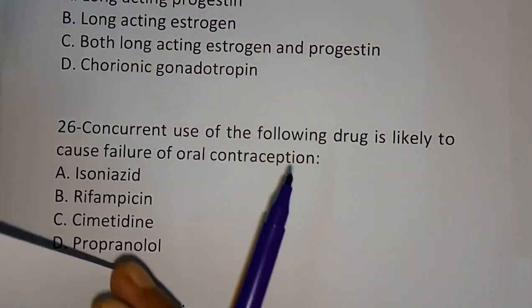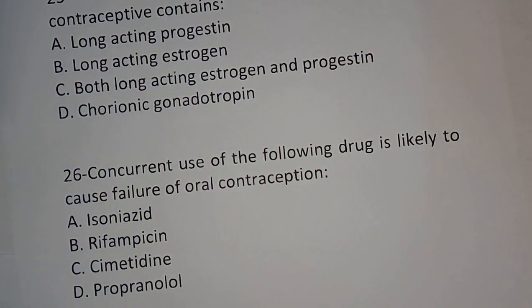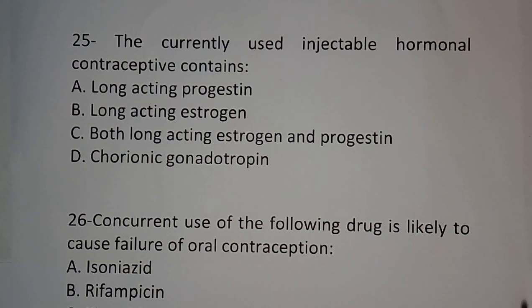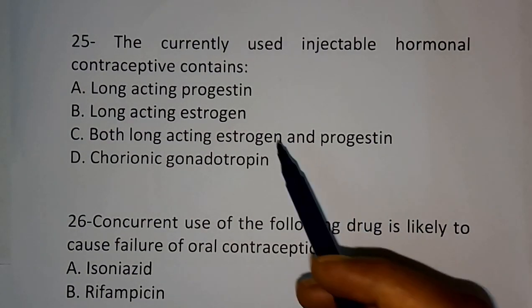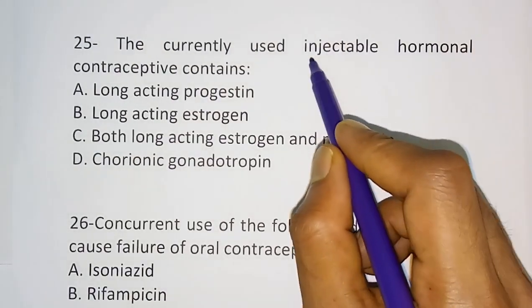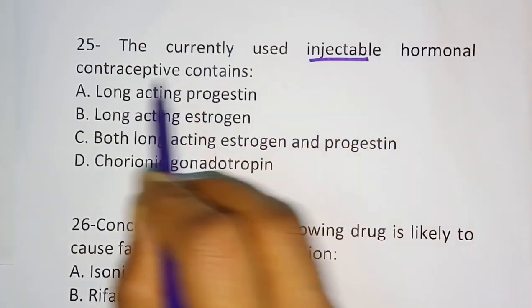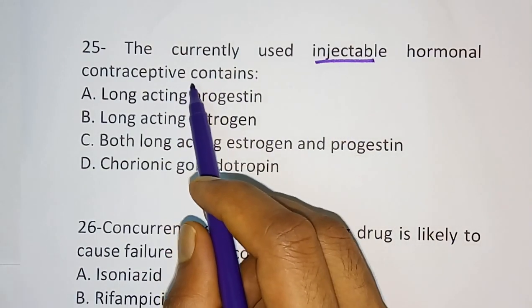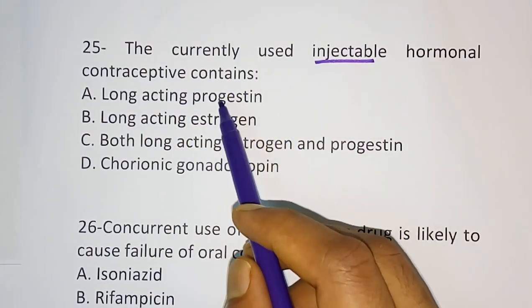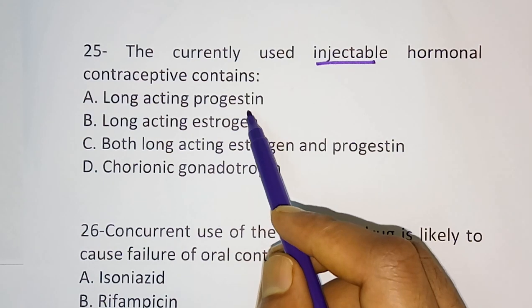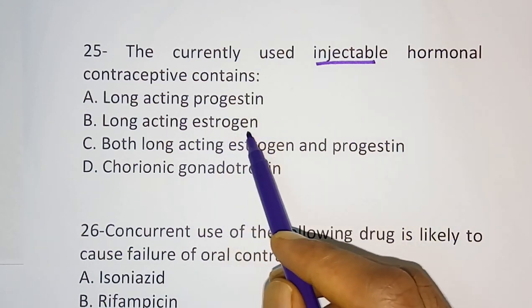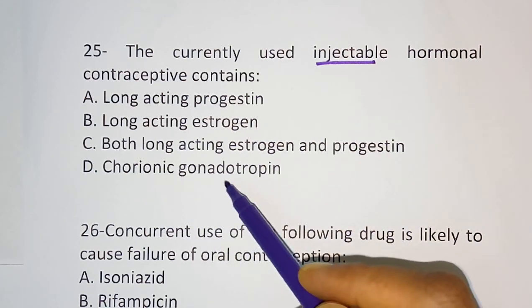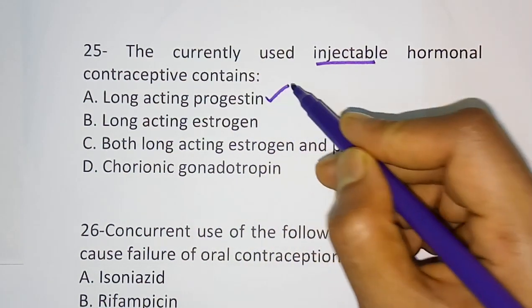Question number 25: The currently used injectable hormonal contraceptive contains — this is asking about injection contraceptives. Options: long-acting progestin, long-acting estrogen, both long-acting estrogen and progestin, chorionic gonadotropin. The correct answer is long-acting progestin.